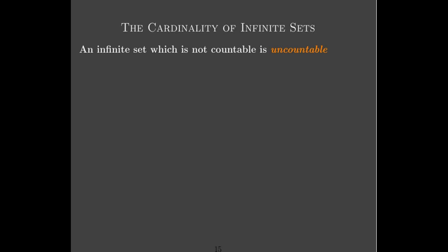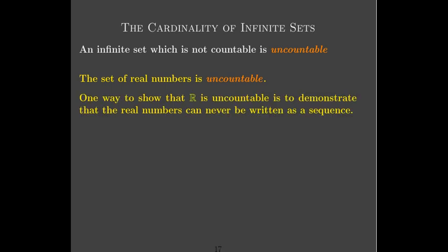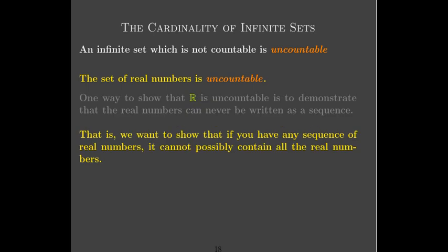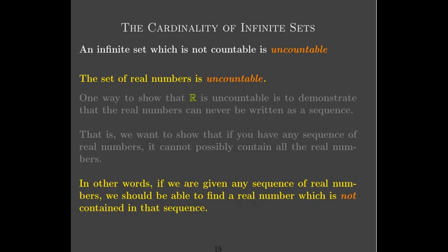Our first group is countable sets. The second group is, if it's not countable, it's called uncountable. The set of real numbers is uncountable — that's the claim we're making. How could we show this? Remember that a countable set should be writable as a sequence. So if we can demonstrate that any sequence of real numbers does not contain all of the real numbers, then we've shown that it's impossible to write the real numbers as a sequence. We say: if you have any sequence of real numbers, we need to show that it is incomplete — there is at least one real number not contained in that sequence.